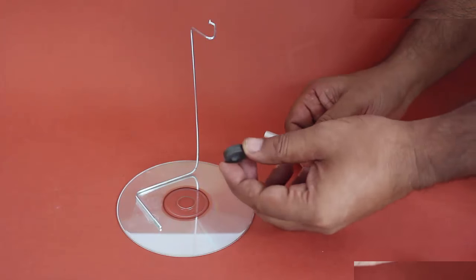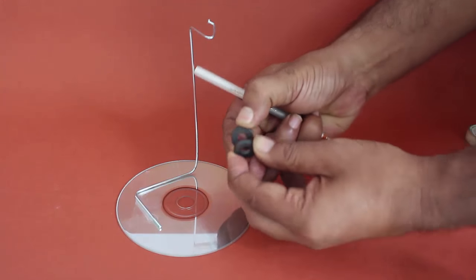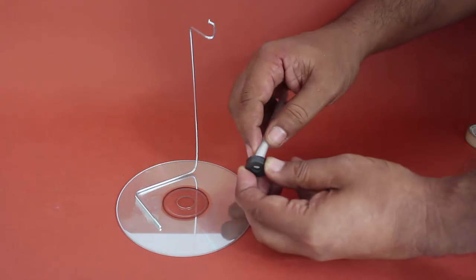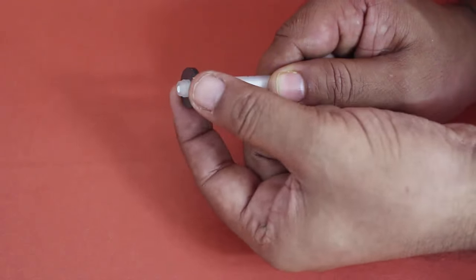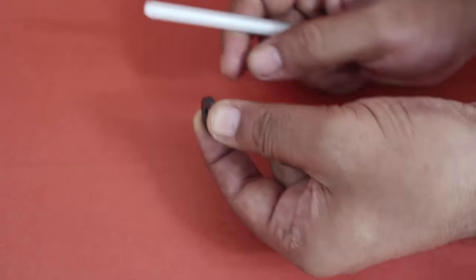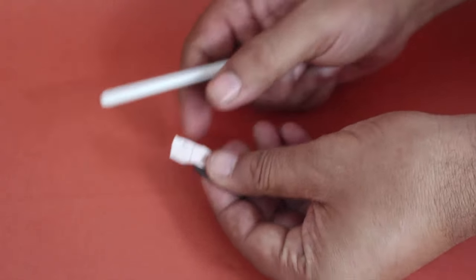Take two ring magnets and keep them in such a position that they are attracting. Insert one of the magnets on the pen. If the magnets are loose, insert a piece of paper to make it fit tightly.